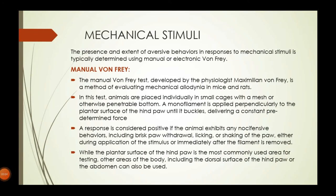Under the heading of mechanical stimuli, the Von Frey method is used. The Von Frey test was developed by physiologist Maximilian von Frey. It is a method of evaluating mechanical allodynia in mice or rats. Animals are placed individually in small cages with a mesh or penetrable bottom, and a monofilament is applied perpendicularly to the plantar surface of the hind paw until it buckles, delivering a constant predetermined force.